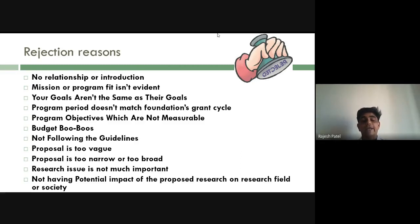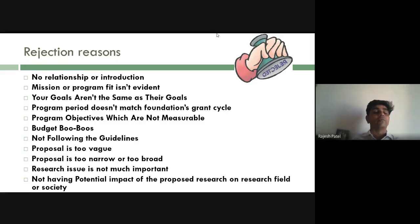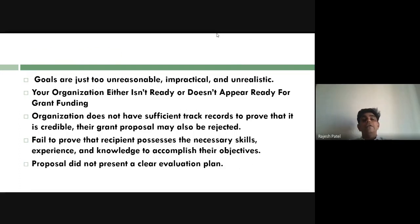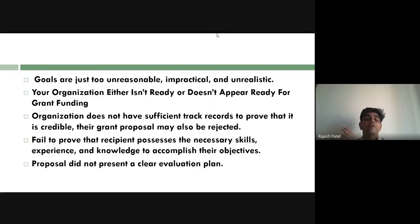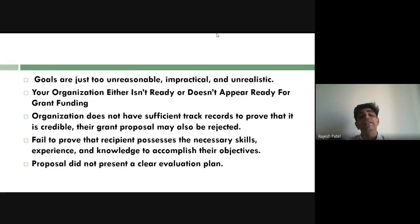Not demonstrating potential societal impact is another reason for rejection. Research should not only serve academic purposes — it should also benefit society, the economy, and the environment. Even a small project must be projected in a multi-dimensional way. Avoid setting unrealistic goals — for example, claiming that a single project will produce a treatment for cancer is totally unrealistic. Use language that is ambitious yet achievable.